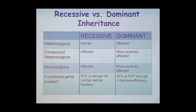Now what happens if you're homozygous — if you have two copies of the mutant allele? In this case, with human genetic diseases, they are more severely affected. So whether you have two copies of the same mutation or two different mutations in that gene, you're more severely affected. And very often these are lethal very early in life, or even embryonic lethals.